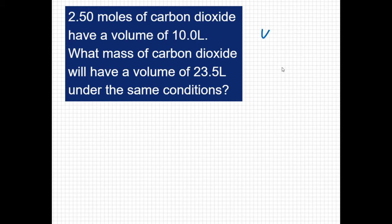Avogadro tells us that V1 over N1 would equal V2 over N2. I'm looking for the final amount. I'm looking for N2.